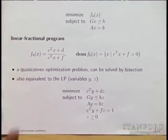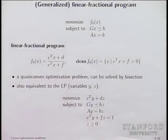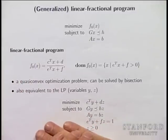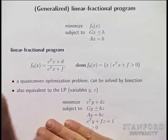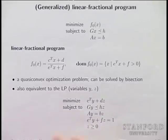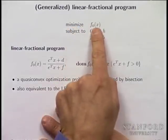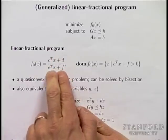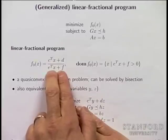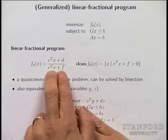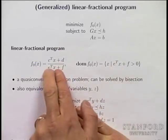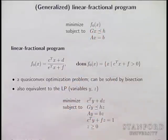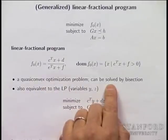Last time we looked at linear fractional programs. That's a very famous, maybe the most famous, quasi-convex problem. There are lots of variations on it. A generalized linear fractional problem is this: you minimize a linear fractional function, and by convention the denominator is positive. You minimize a linear fractional function subject to linear inequalities and linear equality constraints. That's a quasi-convex optimization problem, and you can solve it by bisection.